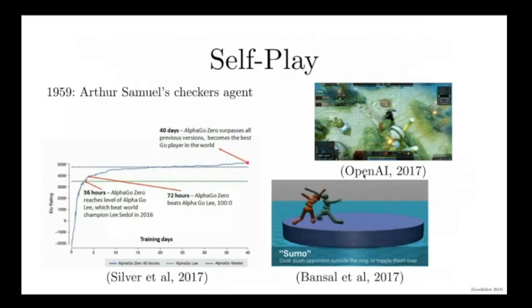You can also think of some of the strategies people use in reinforcement learning as examples of adversarial machine learning. In fact, you could say that reinforcement learning is the birthplace of adversarial machine learning. One of the first machine learning programs ever was Arthur Samuel's checkers-playing agent that he wrote in 1959.